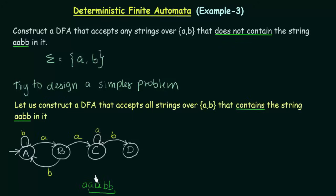On reaching state C, if I get input B I proceed, because yes I can proceed. But if I get input A, I keep it in state C itself, because in the next input I may get a B. So state C is complete: input B goes to state D, input A stays in state C.